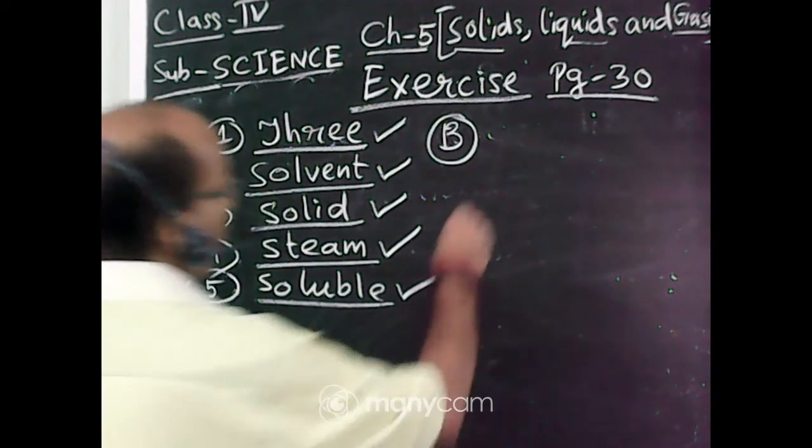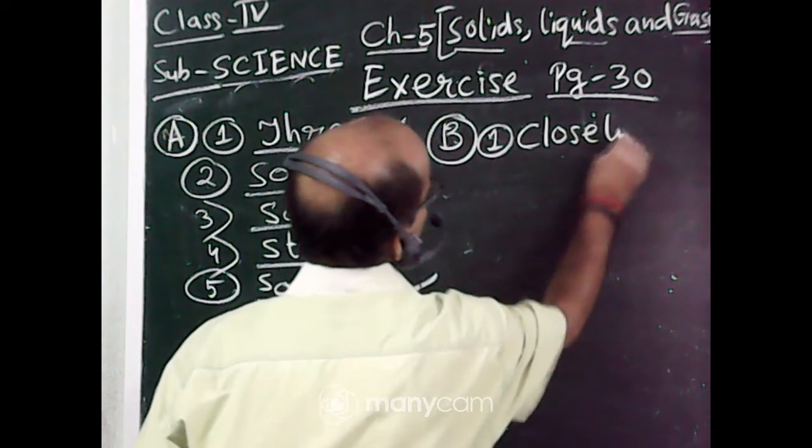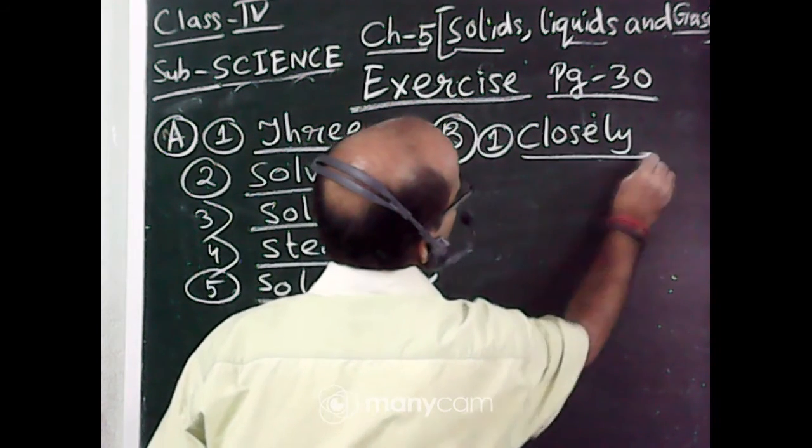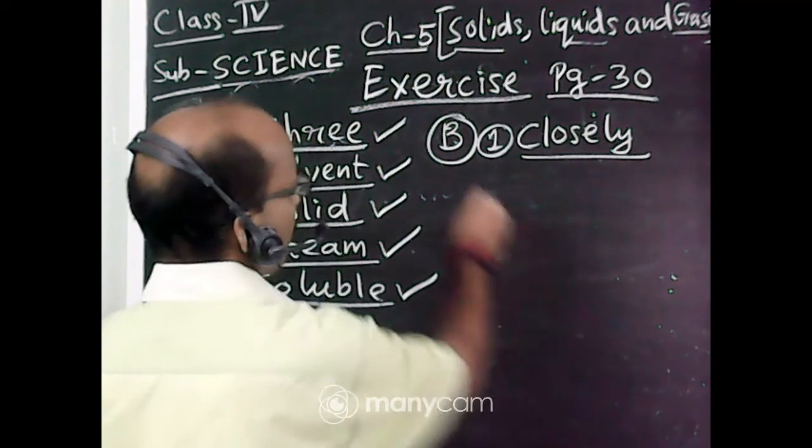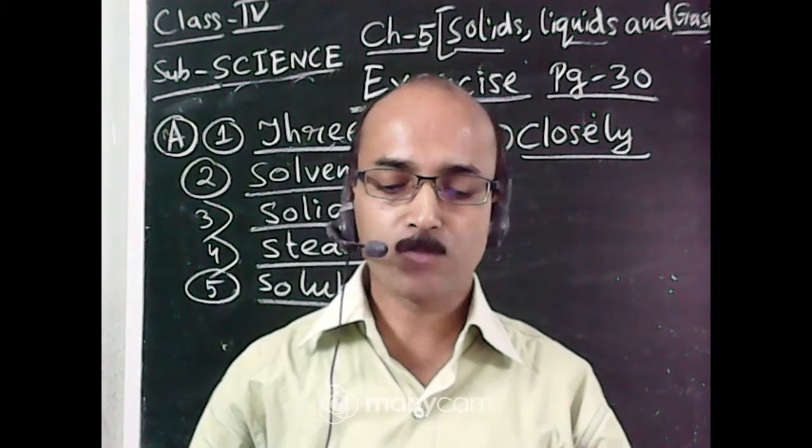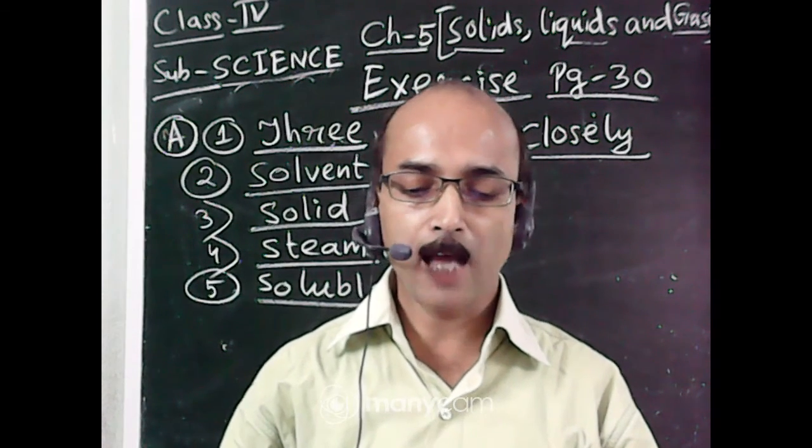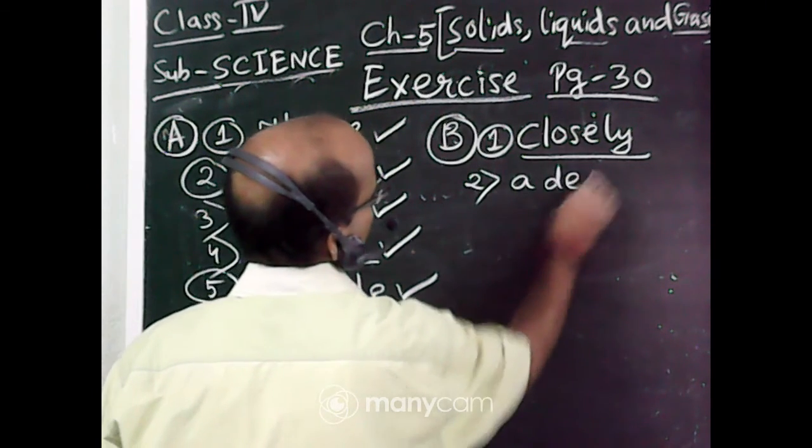Number one: the molecules in solids are very dash packed. It is closely packed. Number two: solids have dash volume. Solids have a definite volume.